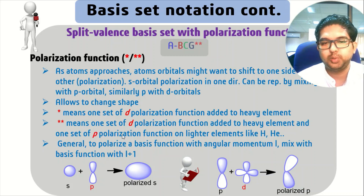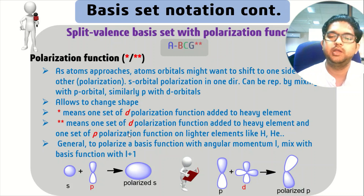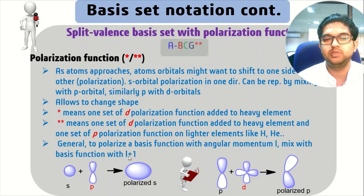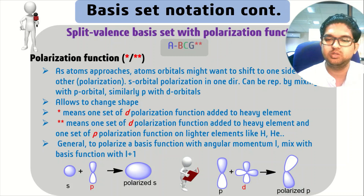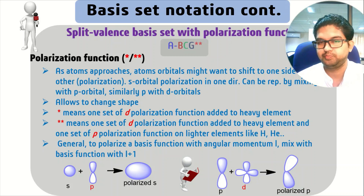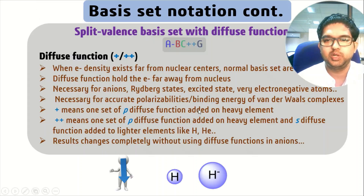The P type polarization function is added to lighter elements like hydrogen and helium. Generally, to polarize a basis function with angular momentum L, if you want to polarize a P orbital, you have to mix a D orbital, represented as L+1 — that is the angular momentum value. These are the examples of basis sets with polarization functions.